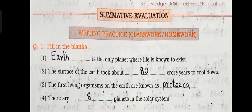Number 2 — The surface of the earth took about dash crore years to cool down. Answer: 80. Number 3 — The first living organisms on the earth are known as dash. Answer: Protozoa.